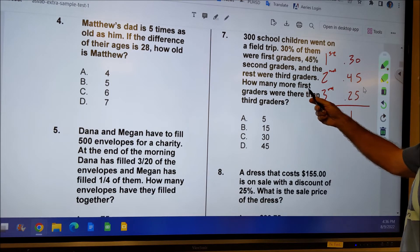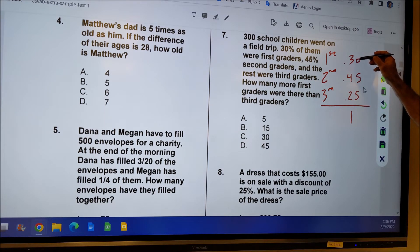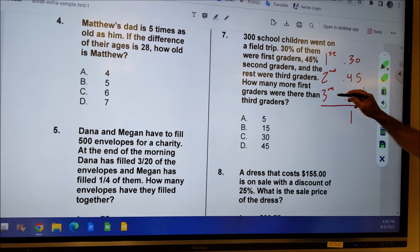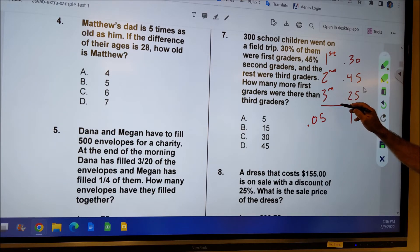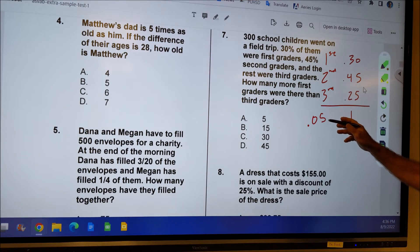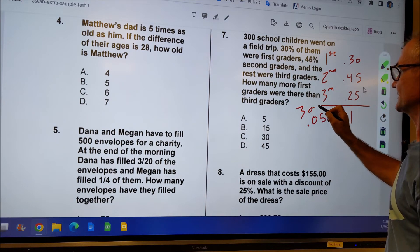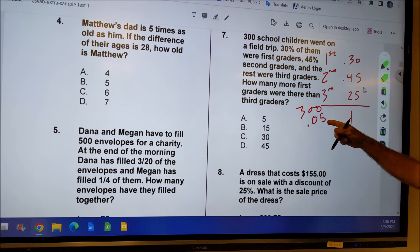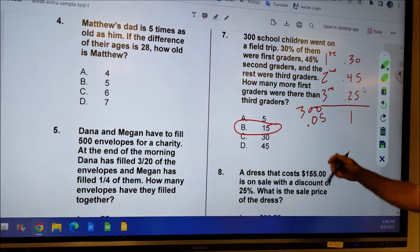And then how many more first graders were there than third graders? Well, there are 30% first graders, 25% third graders. So there are 5% more first graders than third graders. So 5% or 0.05 as a decimal, and there's a total of 300. So I multiply that by 300. I might be able to see that 3 times 5 is 15. And there's my correct answer there.